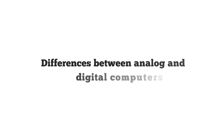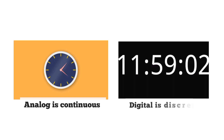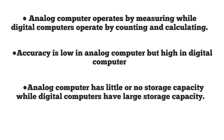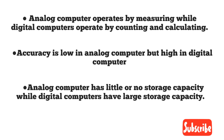Differences between analog and digital computers: Analog computers display data in continuous form, while digital computers display data in discrete form. Analog computers operate by measuring, while digital computers operate by counting and calculating. Accuracy is low in analog computers but high in digital computers.